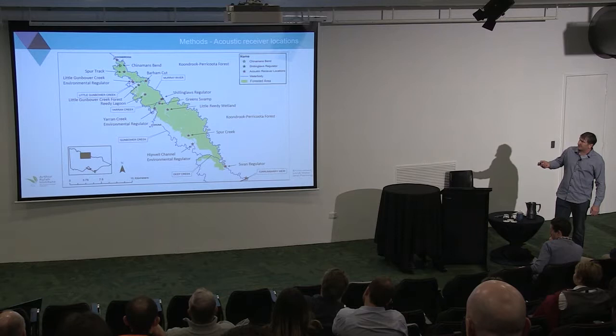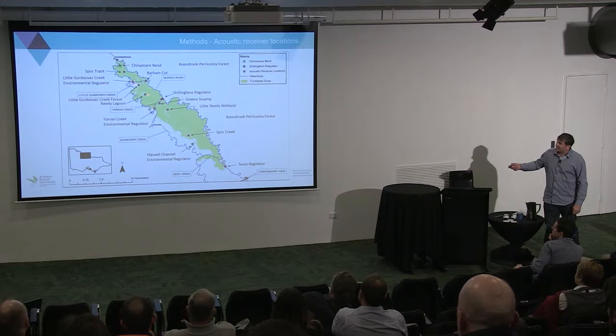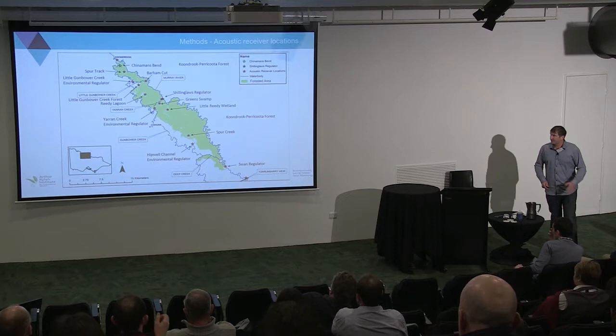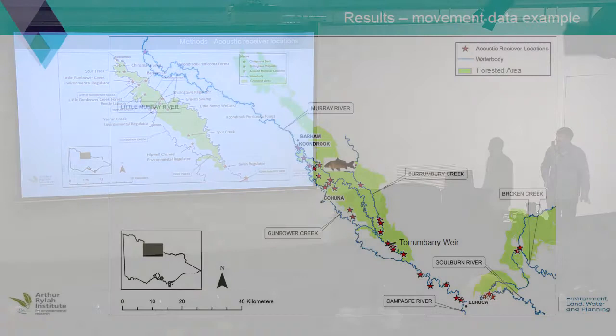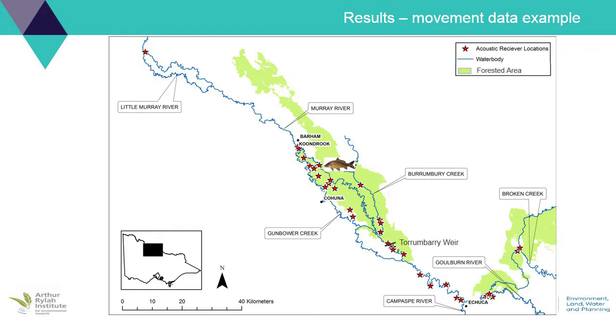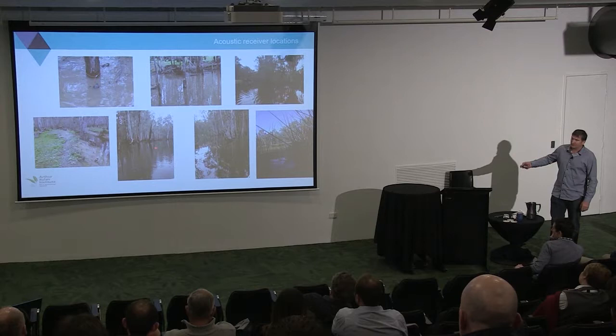This shows the location of the receivers. The main ones to highlight are Chinaman's Bend — the natural forest outfall right at the bottom — and Schillinglaw's Regulator where we have two receivers. Then we have some receivers in amongst the remaining wetlands: Little Gunbower Creek and Reedy Lagoon. Some are in very shallow floodplain areas, mostly towards the lower end, and some moved right up to the top where managed flows can come in. This was a natural flood — there was no water going via the Hipwell channel.